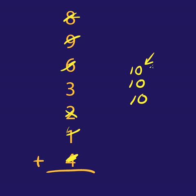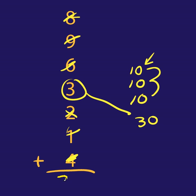You can turn hard math into easy math. 10, 20, 30. And then there's just 3 right there. So the answer is 33.